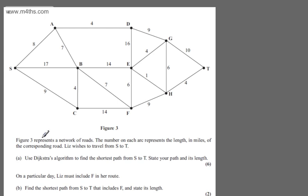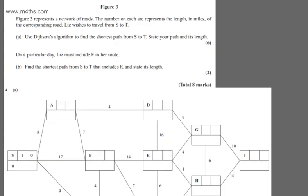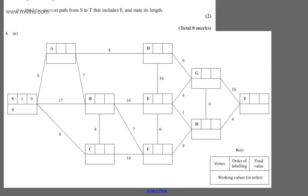This is question number 4. We're told figure 3 represents a network of roads. The number on each arc represents the length in miles of the corresponding road. Liz wishes to travel from S to T. In part A for 6 marks, we're asked to use Dijkstra's algorithm to find the shortest path from S to T. We're asked to state the path and its length. In the book we will have our template, and this is what we've got.